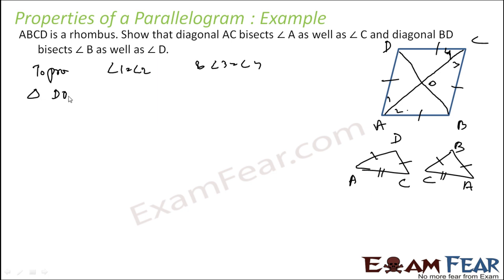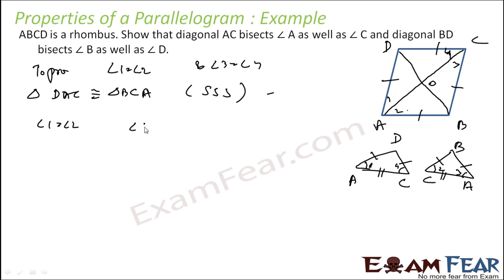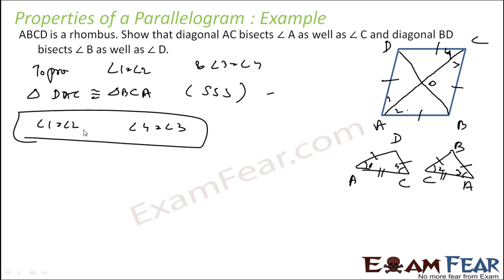Triangle DAC is congruent to triangle BCA by Side-Side-Side. Since they are congruent, angle BAC is angle 1, angle DCA is angle 4, angle BCA is angle 2, and the other is angle 3. Therefore angle 1 is equal to angle 2 and angle 4 is equal to angle 3. That is what we have to prove — and that is proved.